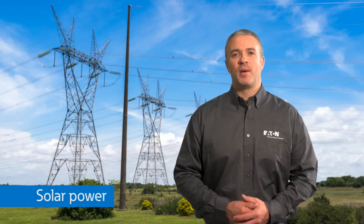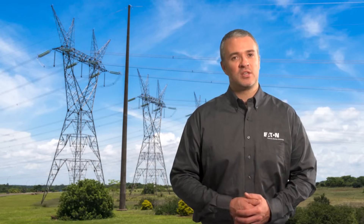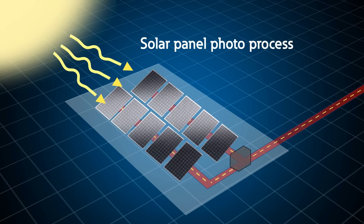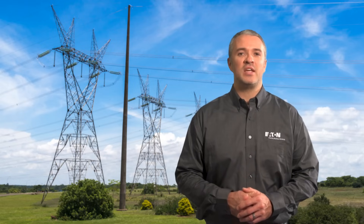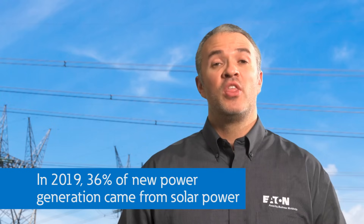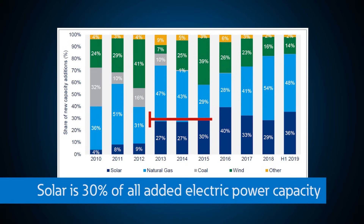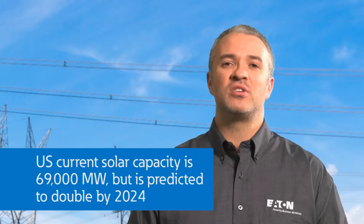Solar power has been on a steady rise as it becomes more available and a good economic investment, with lots of incentives in place for homes and businesses. Solar generation is a totally different type of generation — there is no prime mover or AC generator. Solar panels rely on solar radiation absorbed by photovoltaic panels to produce DC power, which is then converted into AC by power electronics inside an inverter. 36% of all new electricity generating capacity additions this past year are from solar power, and current solar capacity is 69,000 megawatts, on track to double by 2024.